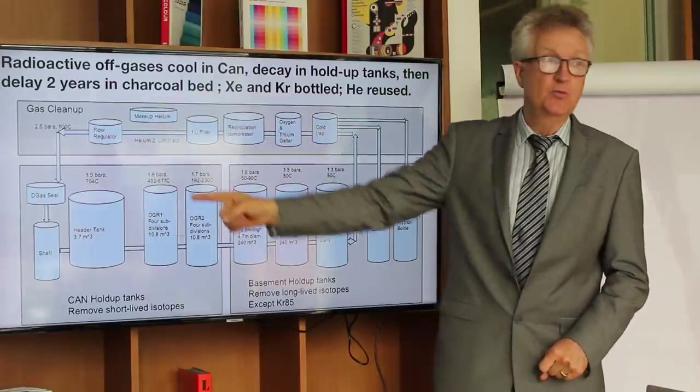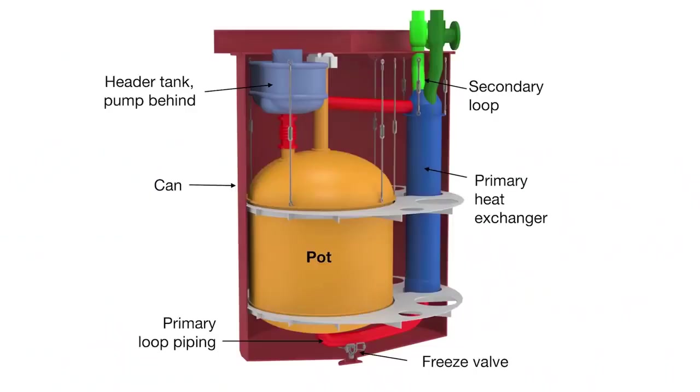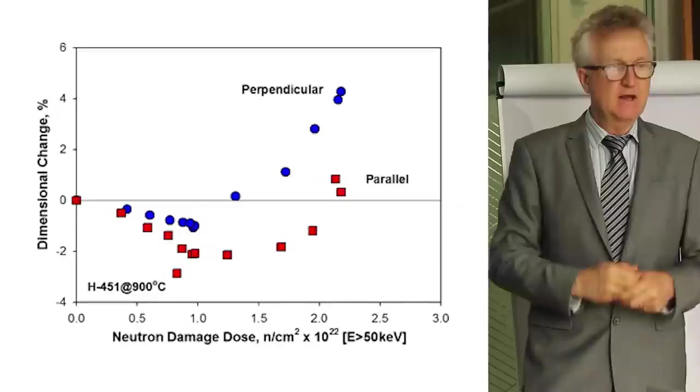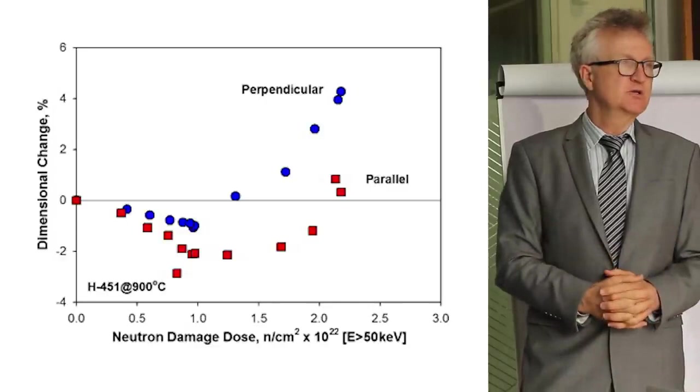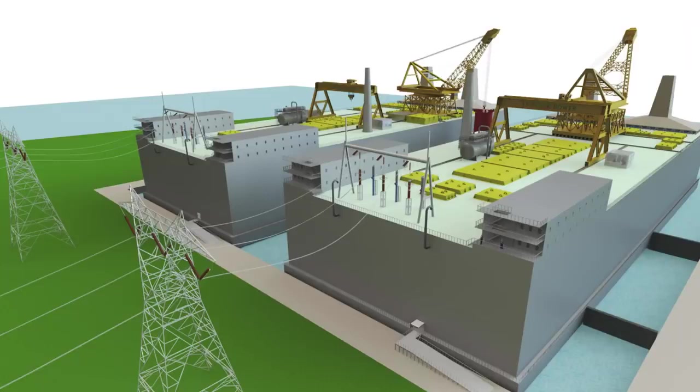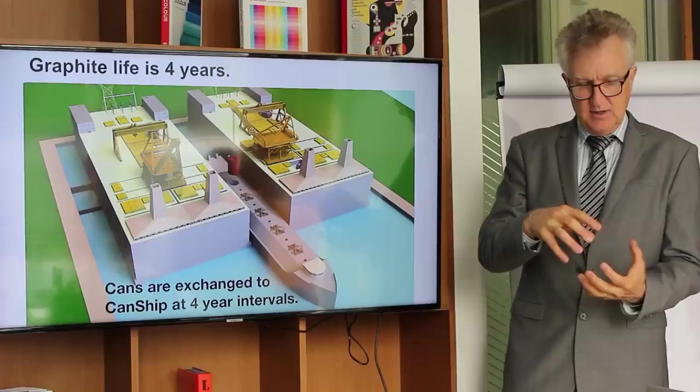Inside the can is graphite. It's the moderator. Neutrons that strike the carbon atoms will move them out of place. And eventually that makes the graphite swell. So first shrink by 2% and then it will start swelling. When it gets back to its original size, we say, okay, it's done now. And we need to replace it. We don't try to replace it at the power plant site. Instead, we leave the graphite inside the pot, which is inside the can. We take the whole can out and we put it into a specially designed ship, which we call the can ship.